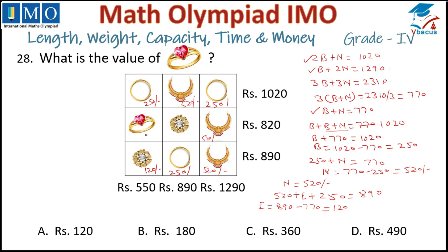Now finding the ring: bangle + ring + earring = 550, so 250 + ring + 120 = 550, meaning ring = 550 minus 370 = ₹180. The cost of the ring is ₹180. Option B is correct. Tick option B.